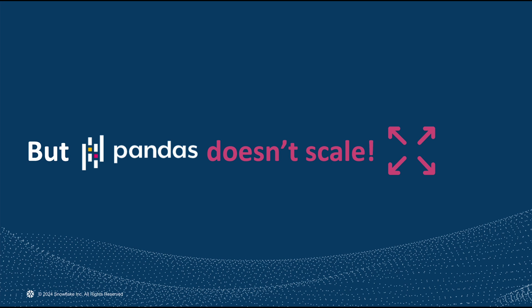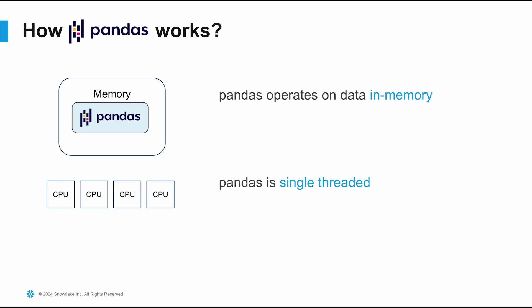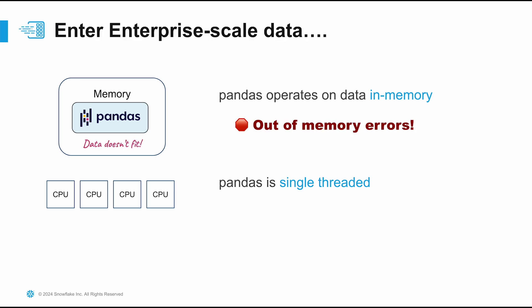But there's an issue: Pandas doesn't scale when it comes to big data. Pandas is an in-memory data structure, so all the data you're working with needs to fit in memory. It's also single-threaded, meaning all processing leverages just one CPU. When we start working with enterprise-scale data — not just megabytes and gigabytes — that picture starts to break down.